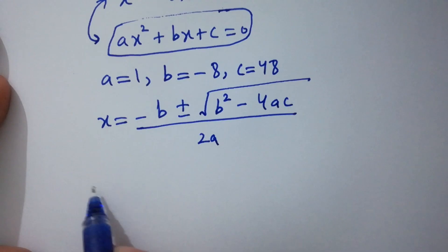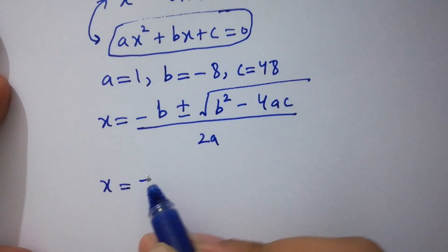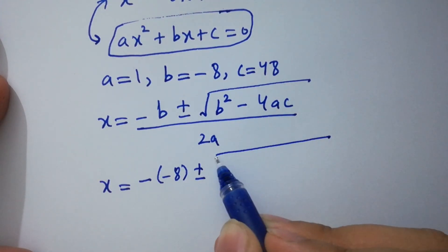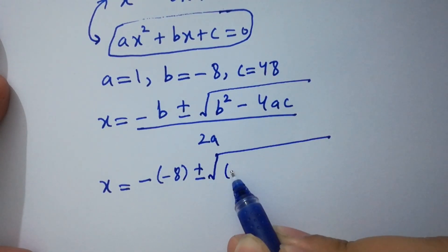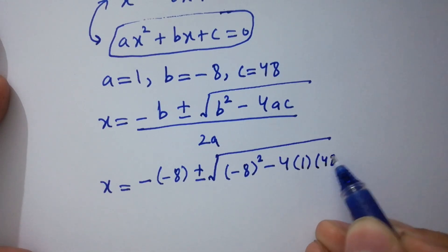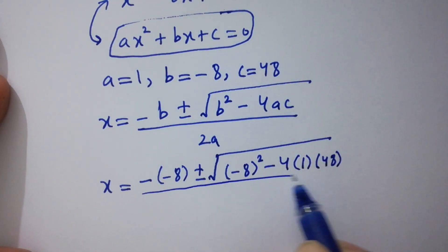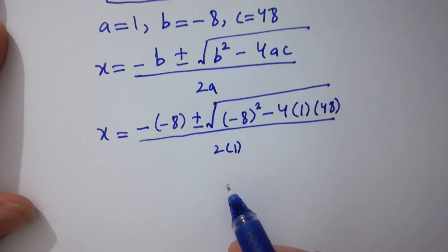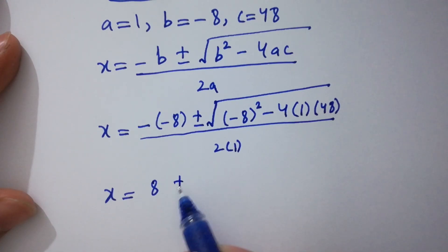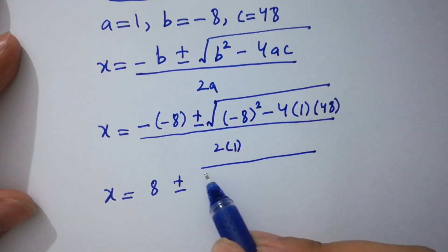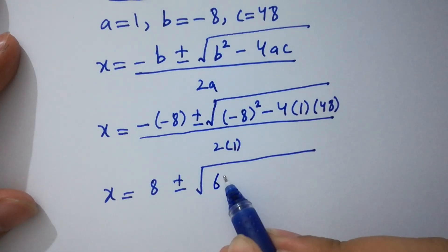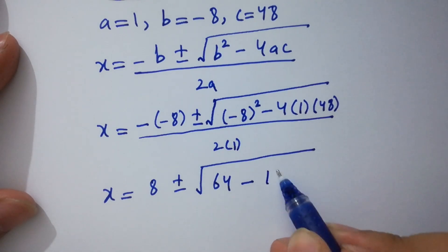Substituting the values: x equals minus (minus 8) plus or minus square root of (minus 8) squared minus 4 times 1 times 48, over 2 times 1. This gives x equals 8 plus or minus square root of 64 minus 192.